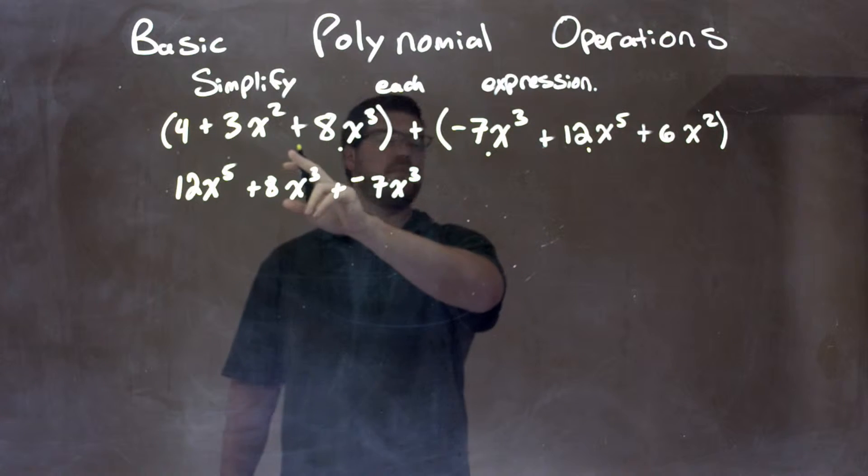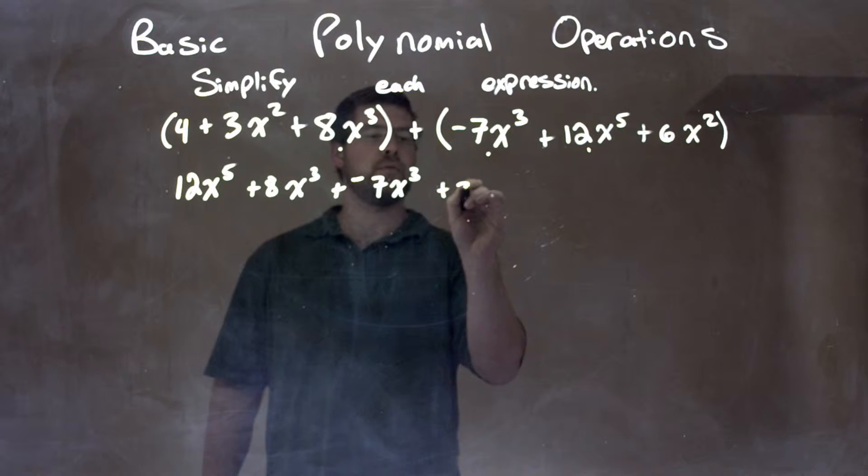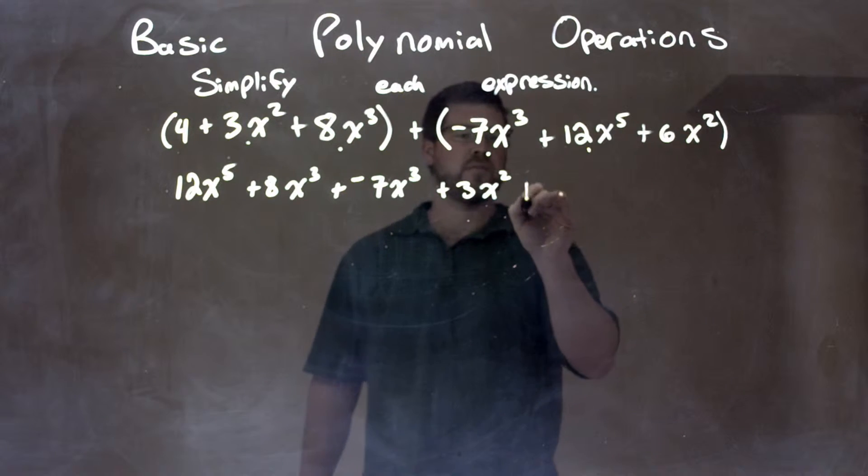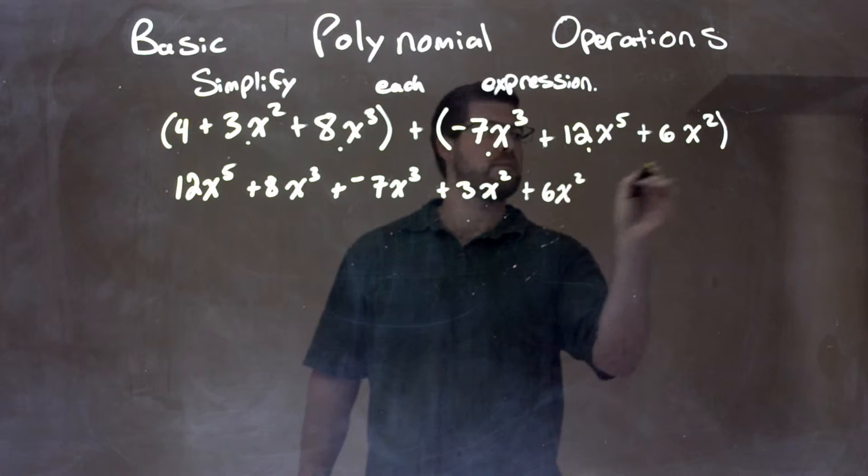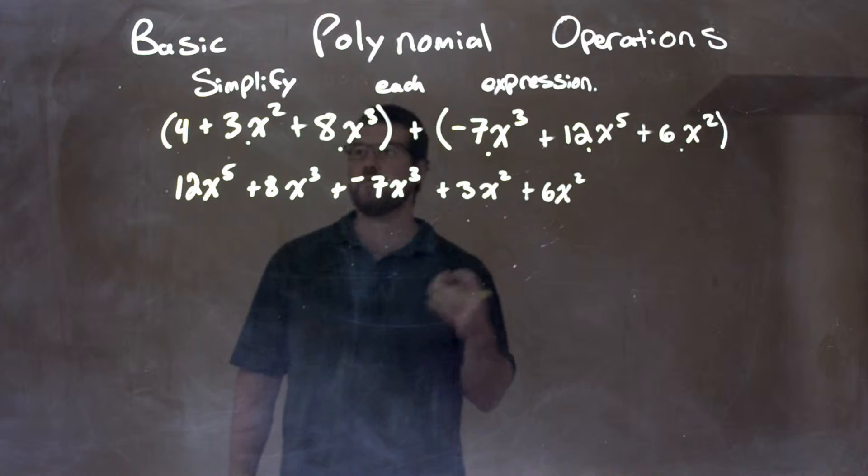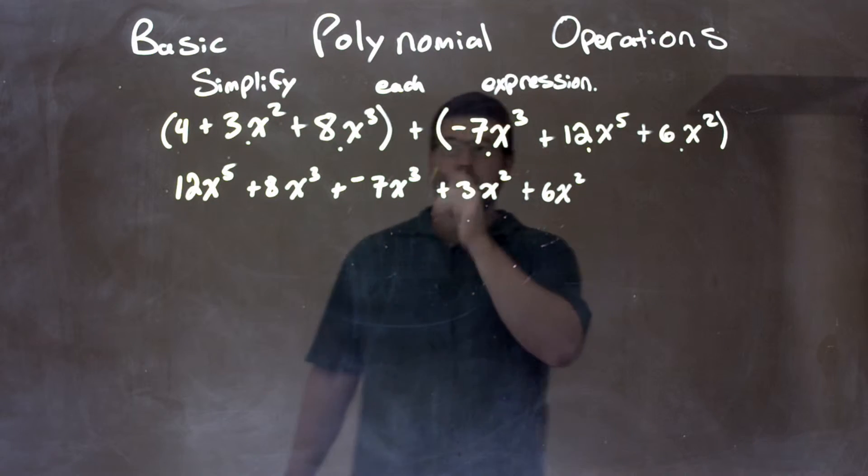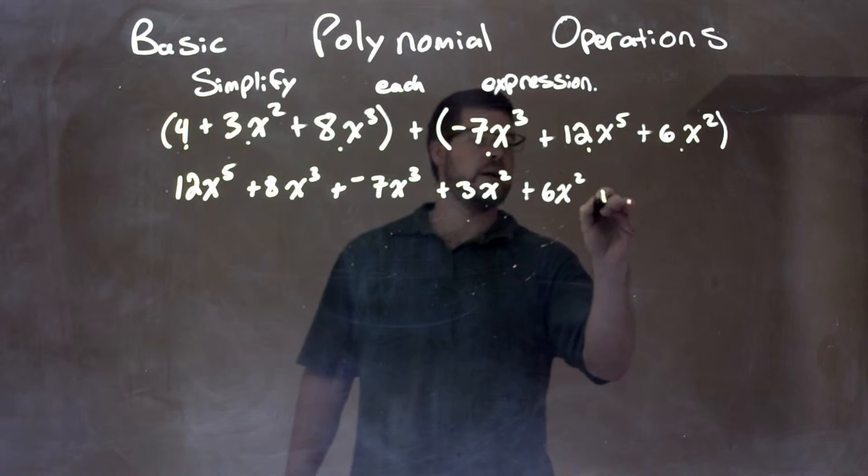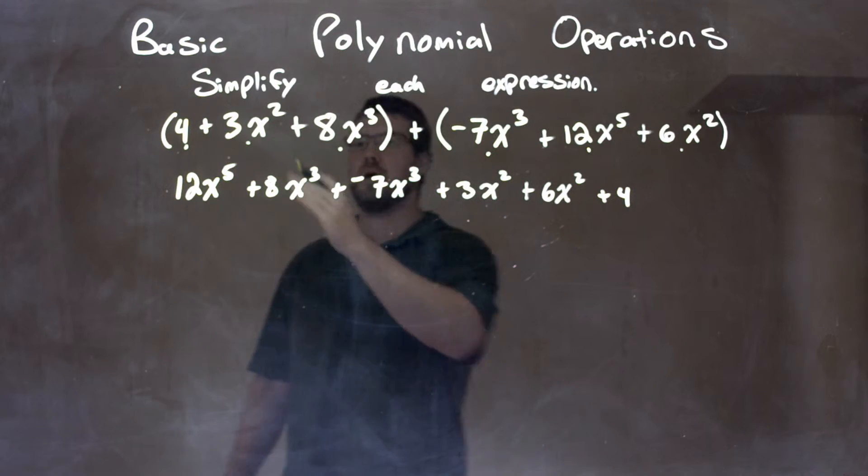Then after that, highest degree is the second power, so we have a plus 3x squared right there, and then 6x squared right there. Then from there, what I need to do is just bring the last one down, which is just the constant, which is 4, and I believe now I have everything brought down.